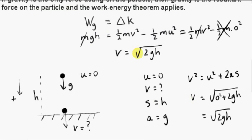So as we saw there, we get root 2gh. So in this simple case, energy is not very useful because we could just as easily have worked it out this way here.